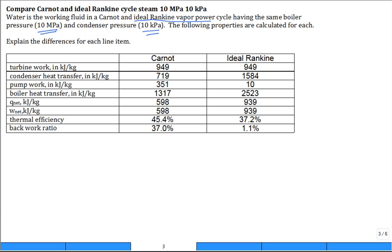You calculate the work of the turbine for the Carnot to be 949 kJ per kg, along with the condenser, pump, boiler, Q_net, work_net, thermal efficiency, and back work ratio.